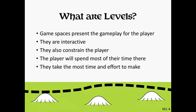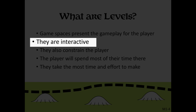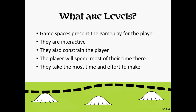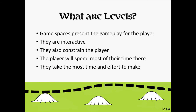A level is a catch-all term that describes the game spaces that the player occupies in the game. Levels present the game's systems to the player and allow the player to interact with those systems by making meaningful choices. Levels are also defined by their boundaries. In a game level, there are places where the player can and cannot go, and things that they are allowed to do or not to do. Understanding the boundaries is a critical part of level design.